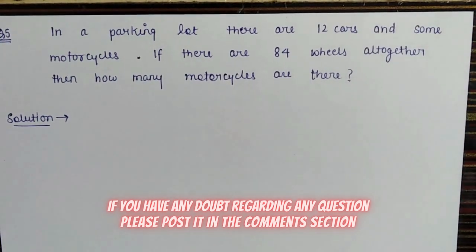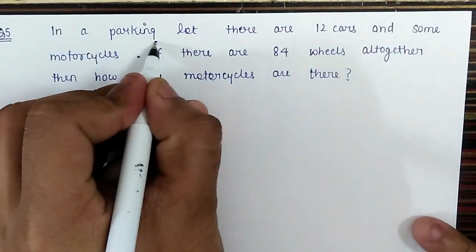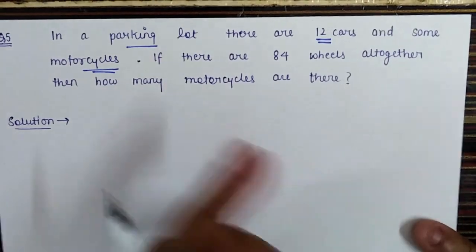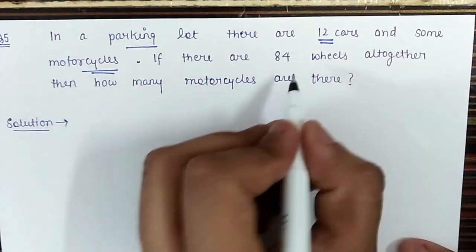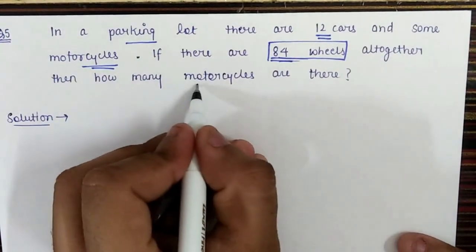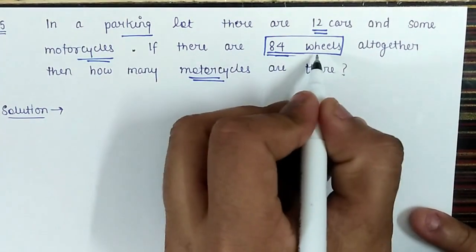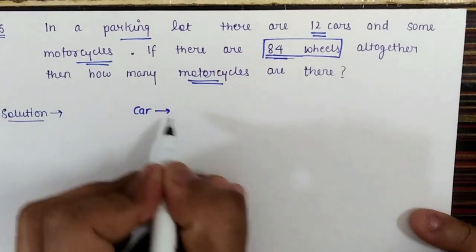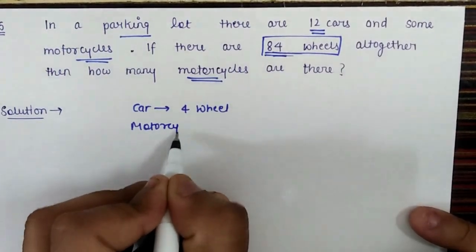Let's discuss the final question for the day. In a parking lot there are 12 cars and some motorcycles — we are not given the total number of motorcycles. If there are 84 wheels altogether, how many motorcycles are there? A car has 4 wheels and a motorcycle has 2 wheels.